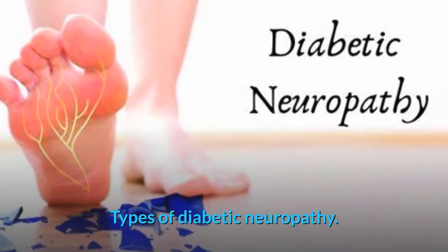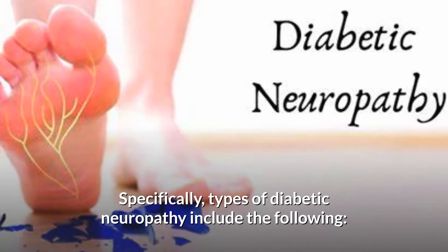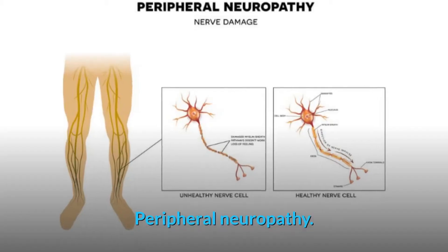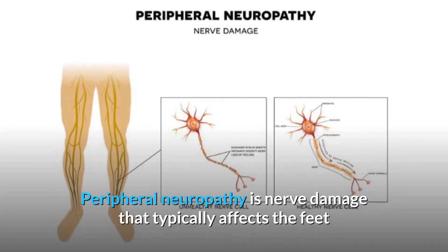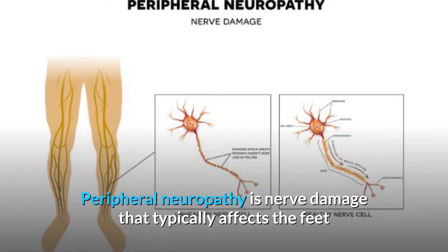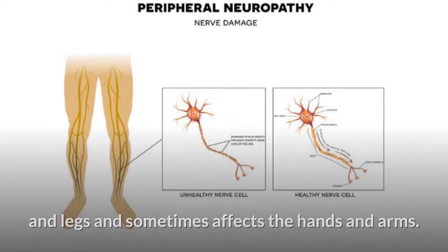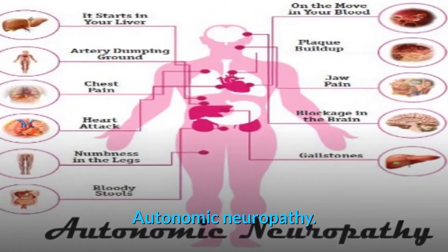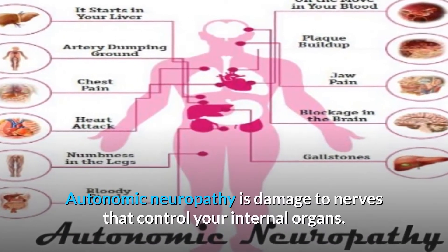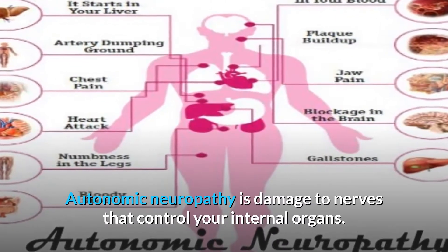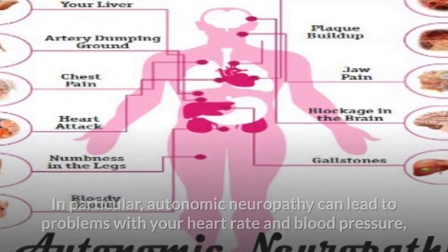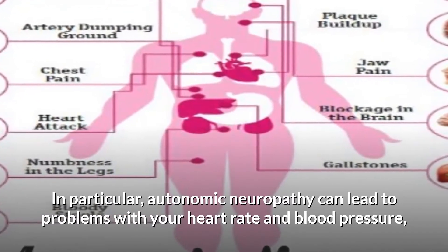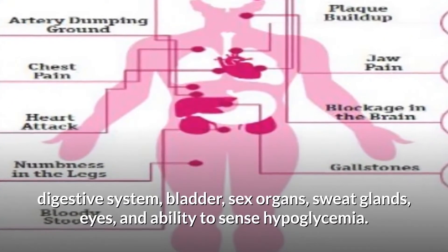Types of diabetic neuropathy include the following. Peripheral neuropathy is nerve damage that typically affects the feet and legs and sometimes affects the hands and arms. Autonomic neuropathy is damage to nerves that control your internal organs. Autonomic neuropathy can lead to problems with your heart rate and blood pressure, and the digestive system.